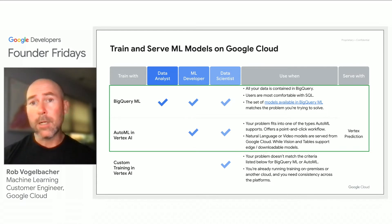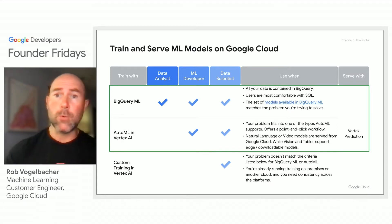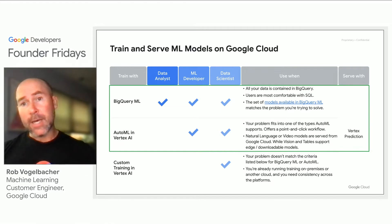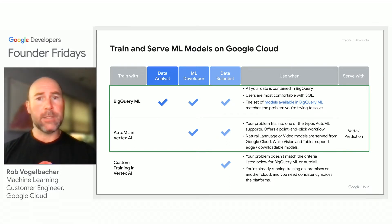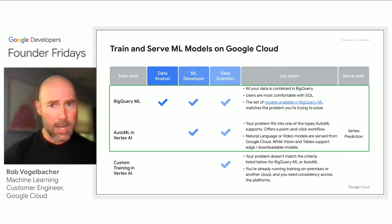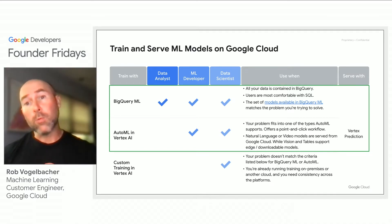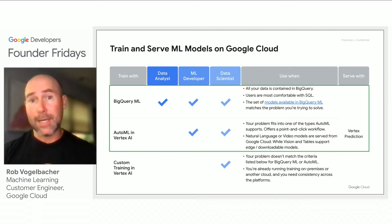One of the most popular and easily accessible ways of building machine learning models is with BigQuery ML, where you train models on your customer data using native SQL. With Vertex AI AutoML capabilities, you can train and deploy a highly performing ML model using a point-and-click interface in Google console, as well as through BigQuery and programmatically through easy-to-use SDKs and APIs. And finally, for established and advanced data science teams, we offer a rich set of capabilities for developing your own custom ML training applications on Google Cloud with Vertex AI.